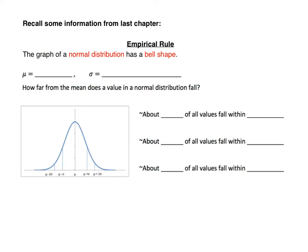We did talk a little bit about the normal distribution and the empirical rule last chapter. Remember that the graph of a normal distribution has a bell shape. It's symmetrical about the mean — the mean is abbreviated with the Greek letter mu — and the mean is always in the center of the curve. The sigma here stands for standard deviation.